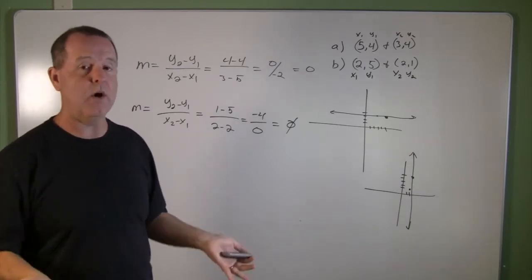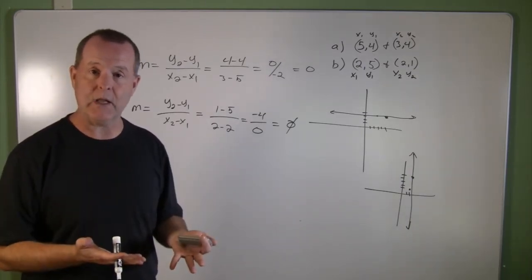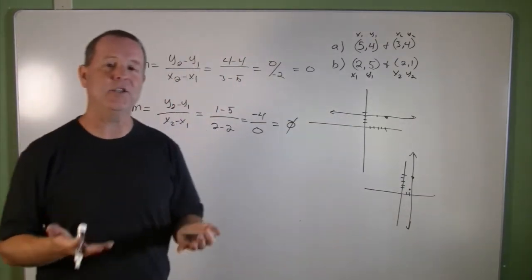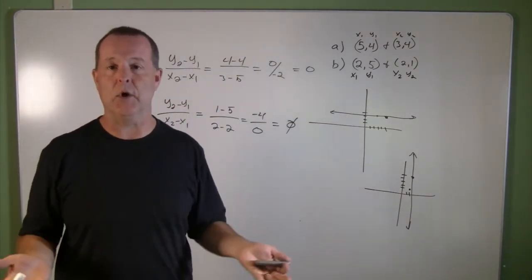So yes, you will find opportunities where you do receive a slope. Sometimes you'll have a slope where it's 0. Sometimes you're going to find two points that produce a slope that doesn't exist.